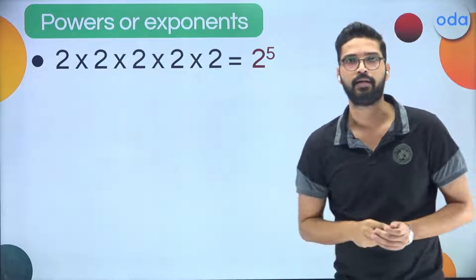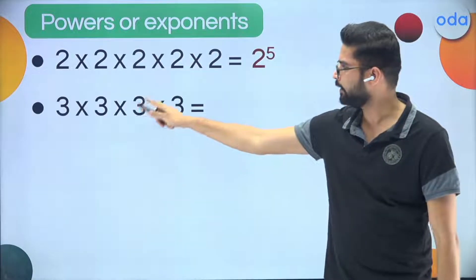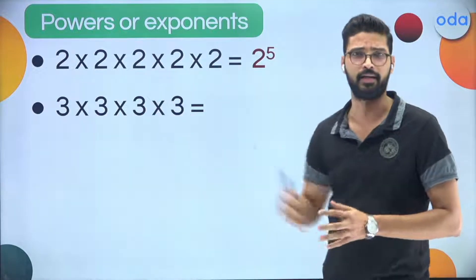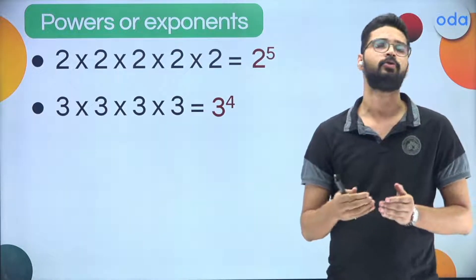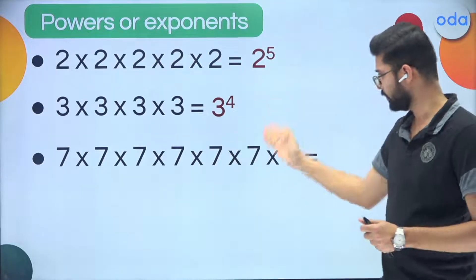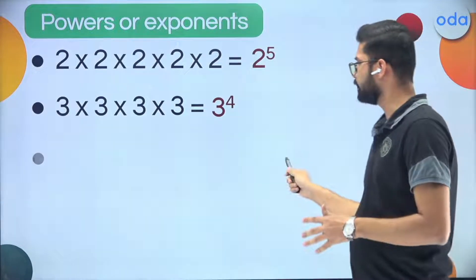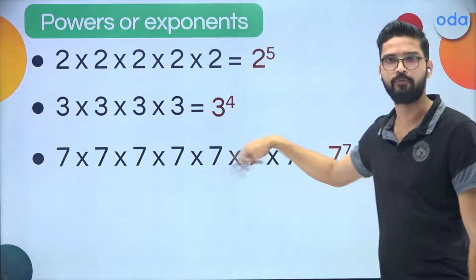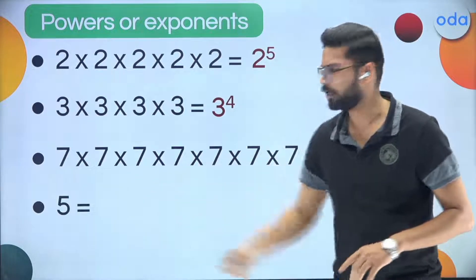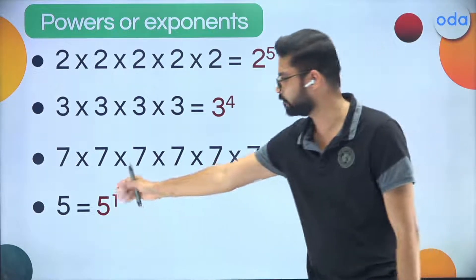For example, 2 × 2 × 2 × 2 × 2 can be written as 2 raised to the power 5. Similarly, 3 × 3 × 3 × 3 can be written as 3 raised to the power 4. If I only have a single 5, this is written as 5 raised to the power 1. So 5 and 5 raised to the power 1 are the same thing. That is the power or exponential form of a number.